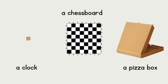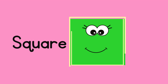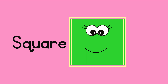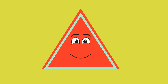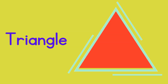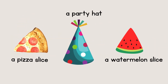Here is also a square-shaped clock. Now you know that a square has four sides and four corners. Here is the next shape — can you see it has three sides and three corners? Which shape is it? It's a triangle! A triangle has three sides and three corners.